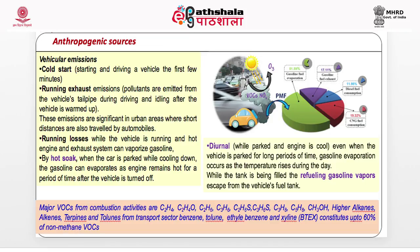Regarding anthropogenic sources, vehicular emissions are significant. During cold start — the first few minutes of driving — emission of volatile organic compounds is at its maximum. Running exhaust emissions include pollutants from the vehicle's tailpipe during driving and idling after warm-up. These emissions are especially significant in urban areas where short distances are covered and automobile use is high, such as in big cities.